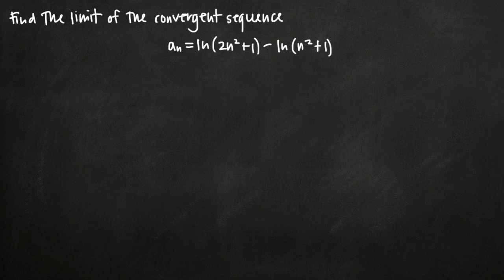One thing that's important to note before we get started: we've been asked to find the limit of the convergent sequence, so we've already been told that this sequence converges. When you're dealing with a sequence — keep in mind this does not apply to series at all, only to sequences — by definition, if the limit exists, then the sequence converges. Therefore, since we've been told the sequence converges, we know that the limit is going to exist.